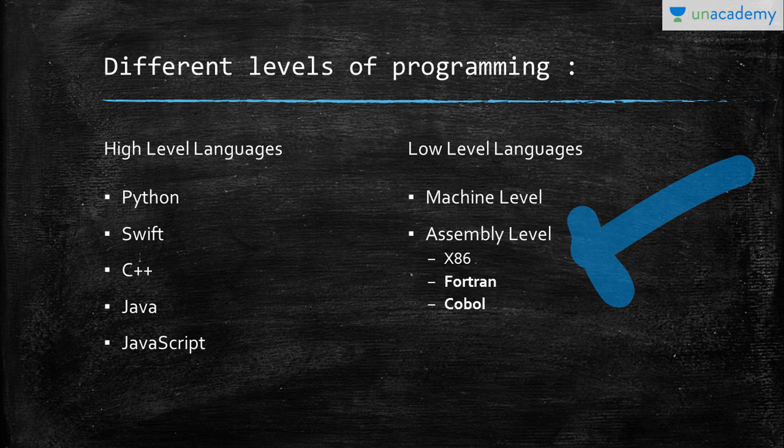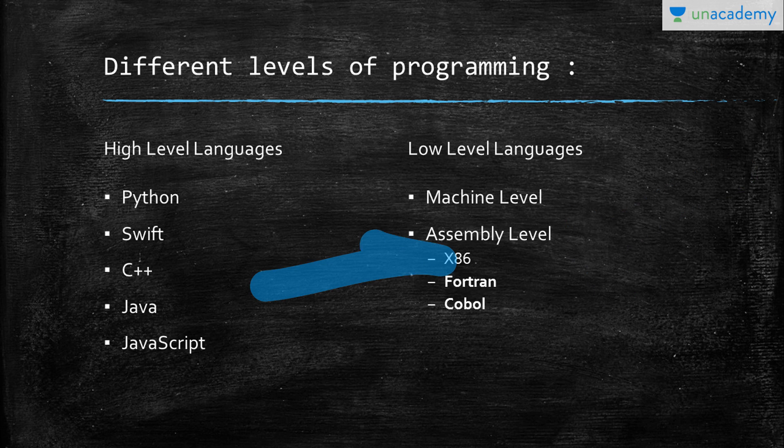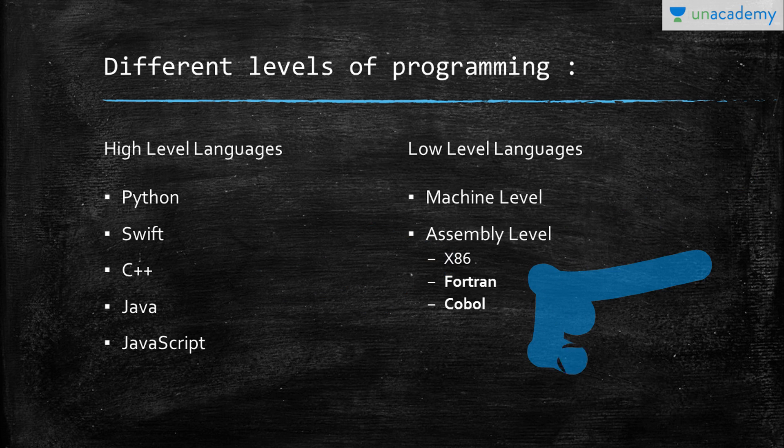The other one is assembly-level languages. These are in a moderate level, in between high-level languages and low-level languages. These are like direct instructions given, but not as much as machine level. For example, some of them are the programming languages for x86 processors, Fortran, Cobol, and many others.